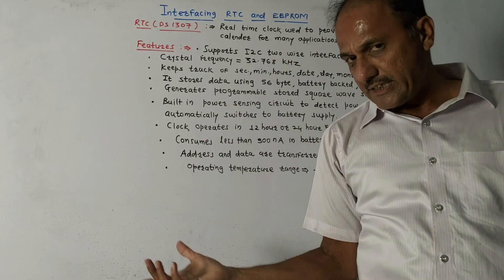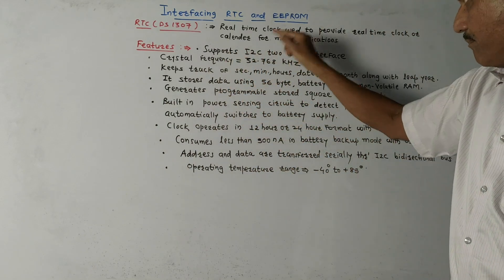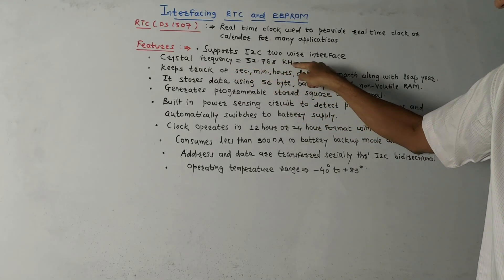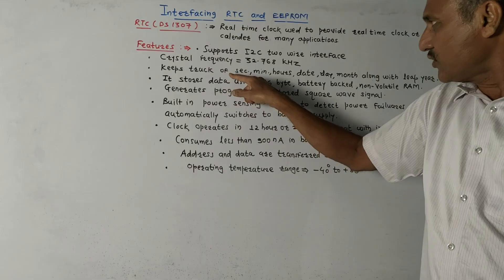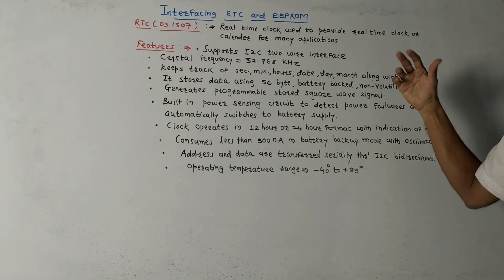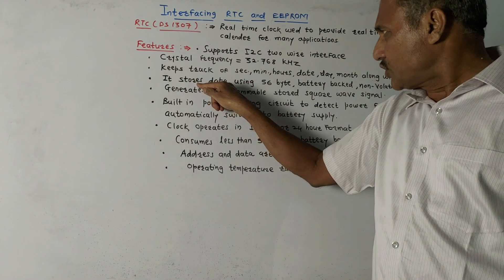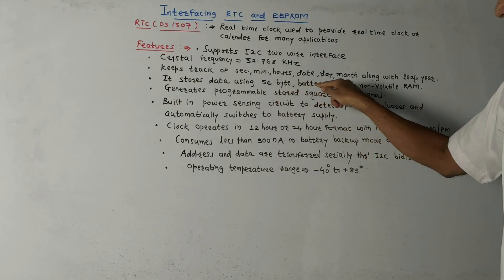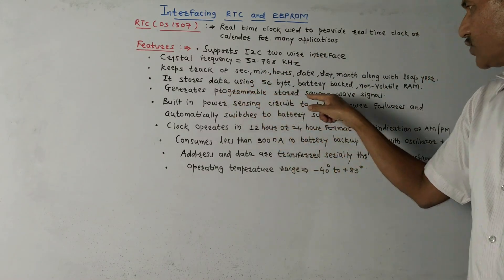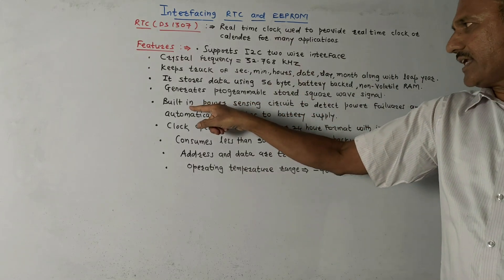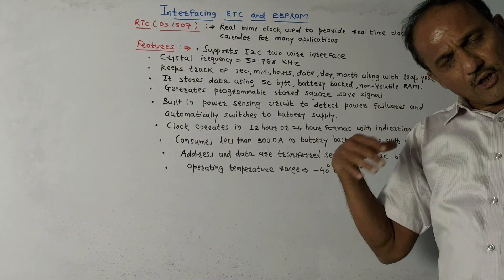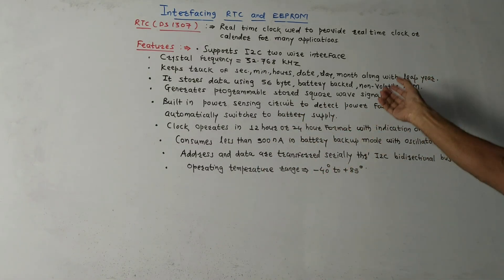Now I have listed some important features of this RTC. It supports I2C two-wire interface. The crystal frequency is 32.768 kilohertz. It keeps track of seconds, minutes, hours, date, day, month along with consideration of leap year. It stores data using 56 byte battery-backed non-volatile RAM and generates programmable square wave signal.